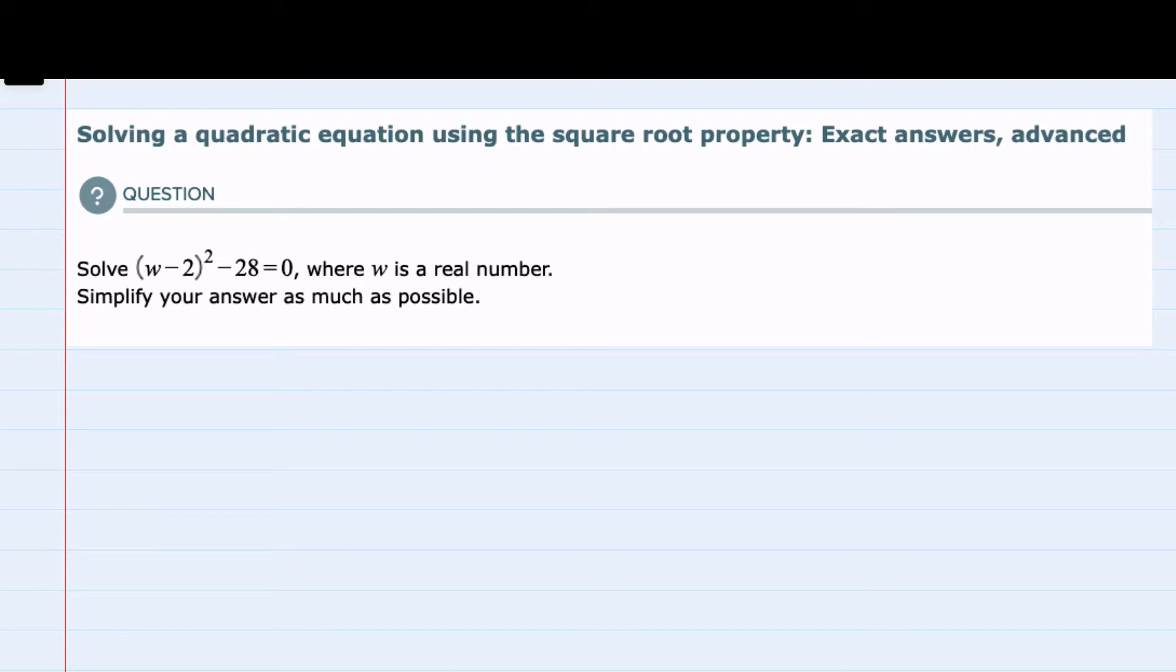Knowing that here we're to use the square root property, our equation we're solving is x minus 2 squared minus 28 equals 0.